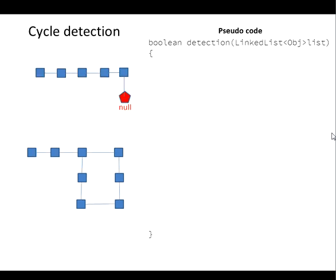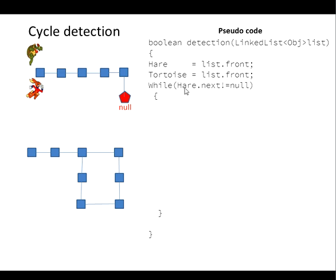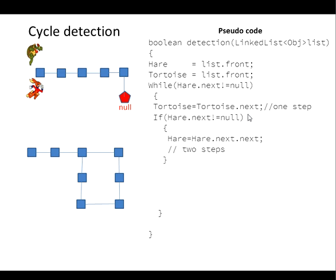Let us try to write pseudo-code to implement this algorithm. Detection is a method that accepts a linked list as a parameter and returns a boolean value — true if the list consists of a loop, and false if there is no loop. We declare two references: a faster one named hare and a slower one named tortoise. Both point to the head of the linked list. We write a loop to traverse the list; the search ends when the hare sees the endpoint, which is null. Tortoise progresses one step per loop and hare two steps. The if statement is used to avoid a null pointer exception, and if a coincidence occurs we break out of the loop and return true. If the hare successfully traverses the entire list and sees an endpoint, the loop exits and returns false.